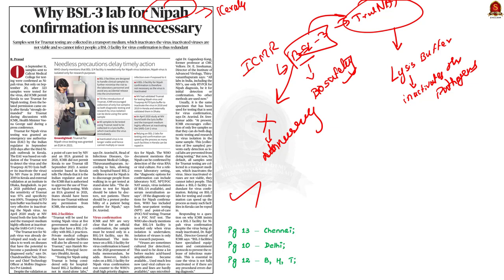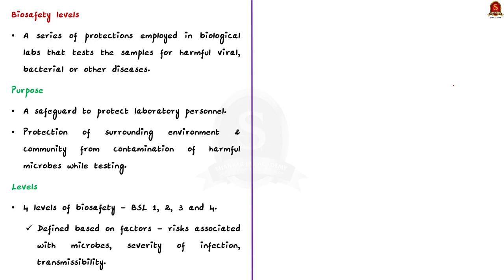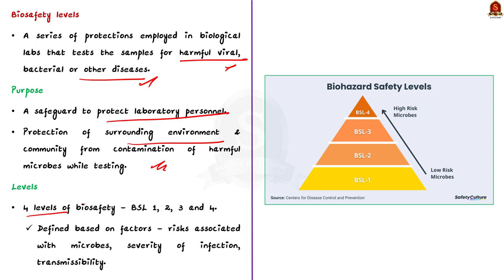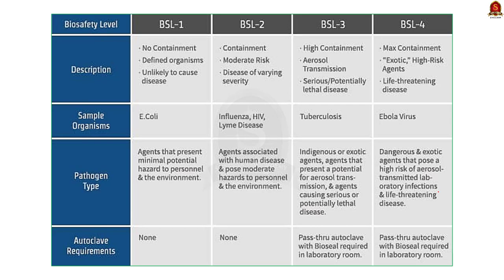In this discussion, let us learn some important points about biosafety levels and the TrueNAT test. Biosafety levels are a series of protections taken up in biological labs which test samples for harmful viral, bacterial, and other diseases. The biosafety levels are individual safeguards designed to protect laboratory personnel who test the samples and to protect the surrounding environment and community from contamination. There are four levels of biosafety — BSL-1, 2, 3, and 4. The levels are defined based on factors like risk associated with microbes, severity of infection, and transmissibility.